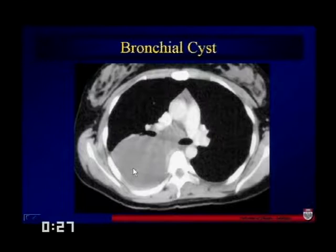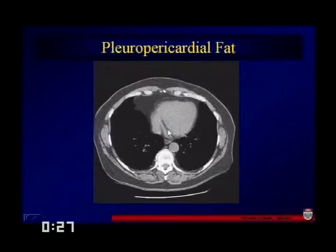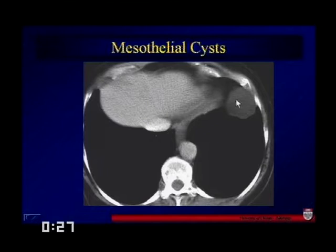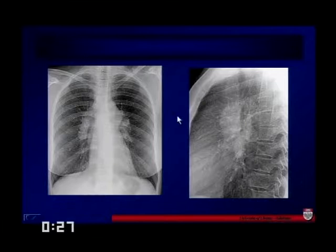This here is a pericardial fat pad — technically called a pleural pericardial fat pad, most commonly seen on the right side. And over here is a pericardial cyst, which can look very similar to the pericardial fat pad. Usually the difference in density is what's going to tip the scales.